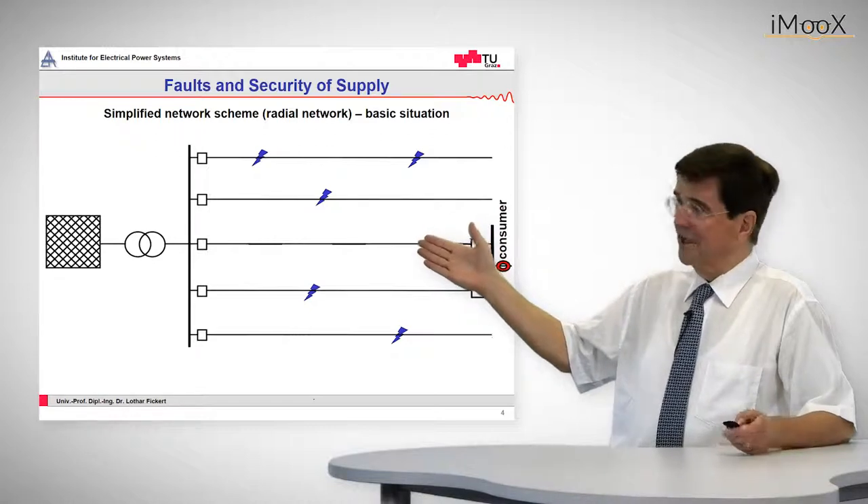So what is a ring structure? A ring structure can be seen to my right side. It consists, as in a normal grid, of the feeding source. This is a transformer on the feeding bus bar, and then we have two lines that go in parallel to the consumer's bus bar which is located at the right side.